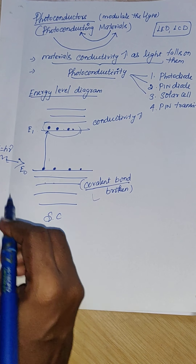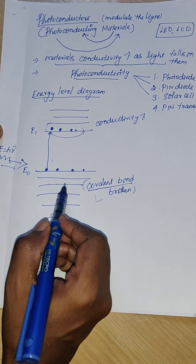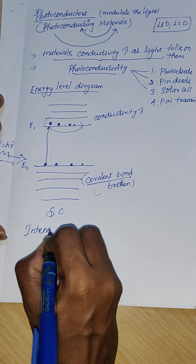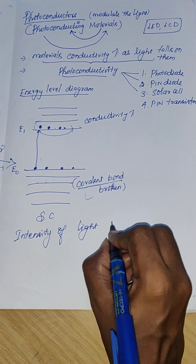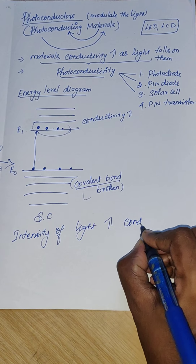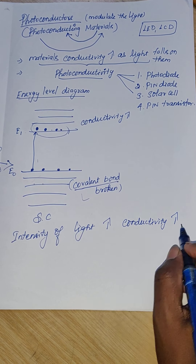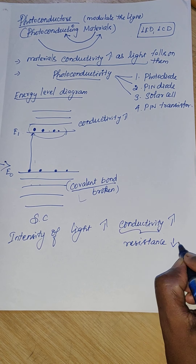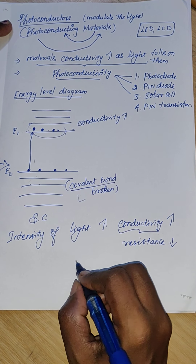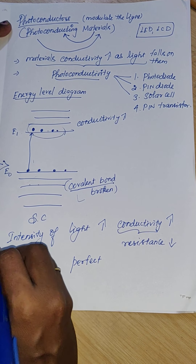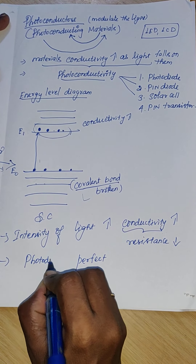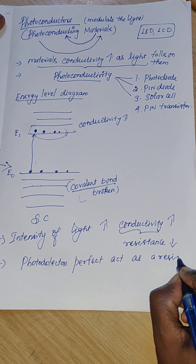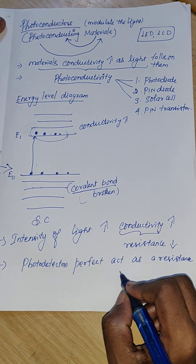To summarize: as the intensity of light increases, conductivity also increases. And when conductivity increases, resistivity or resistance decreases. Therefore, photo conductors perfectly act as a resistance — their resistance decreases as the intensity of light falling on them increases.